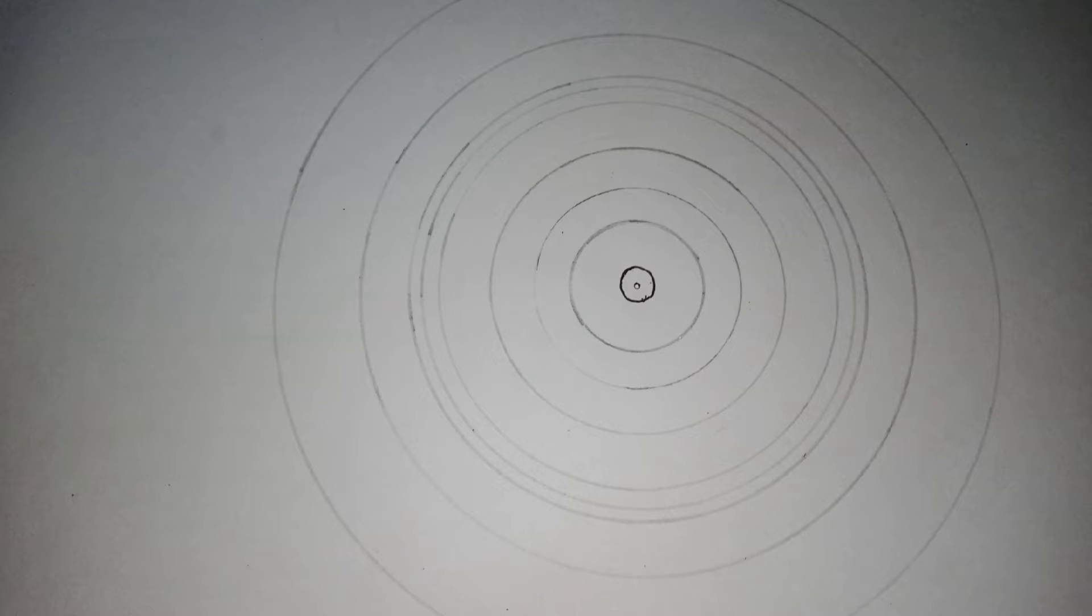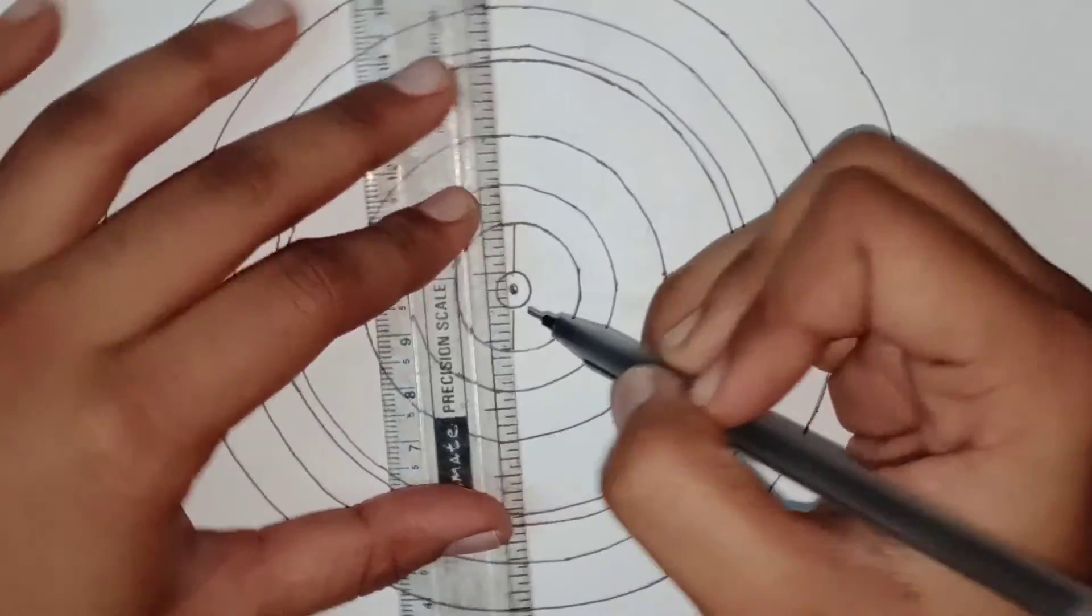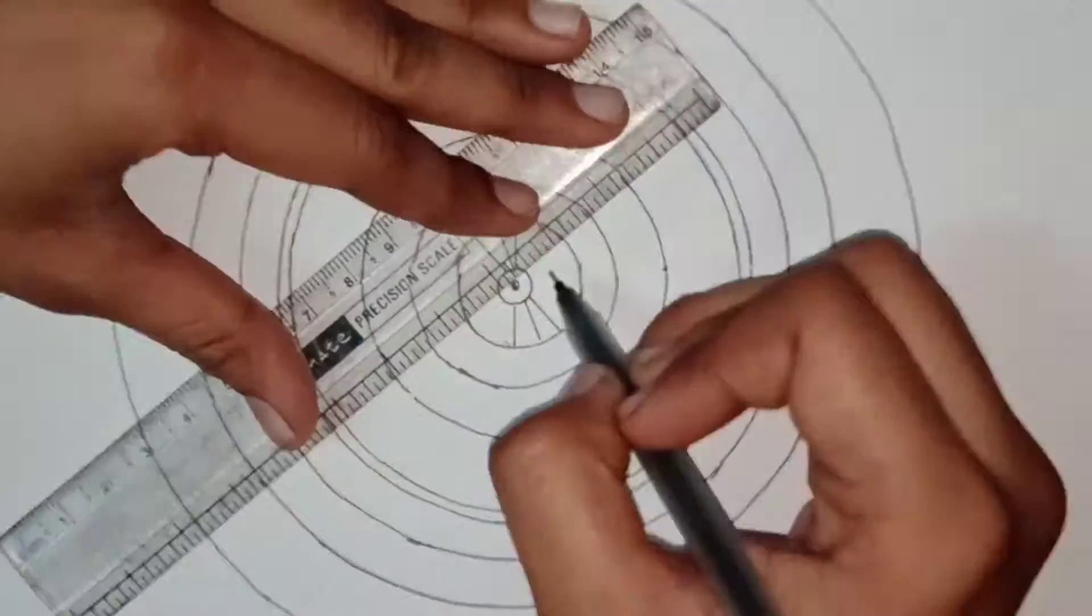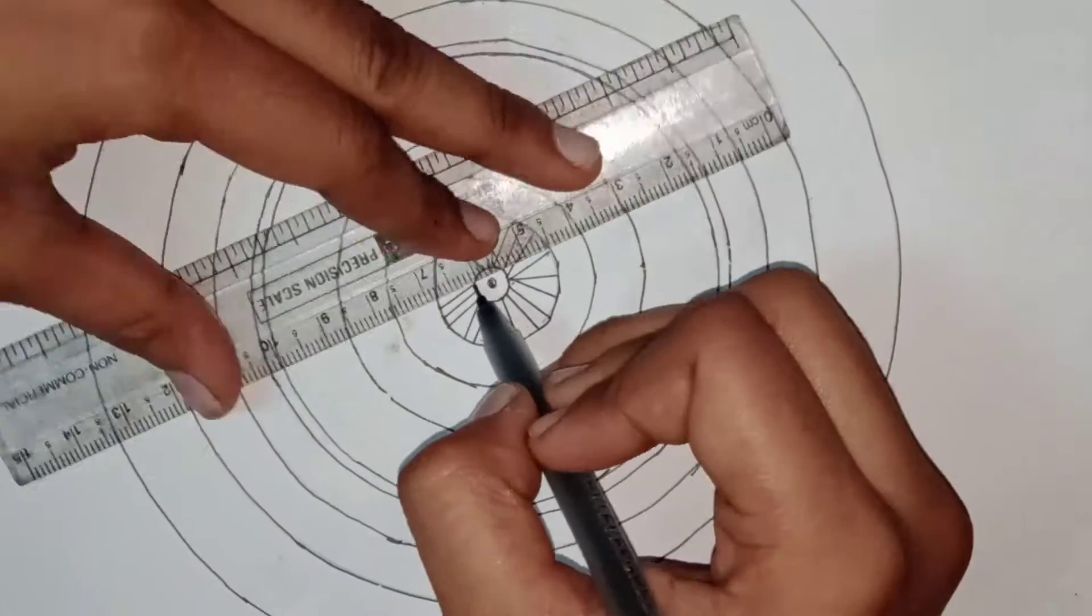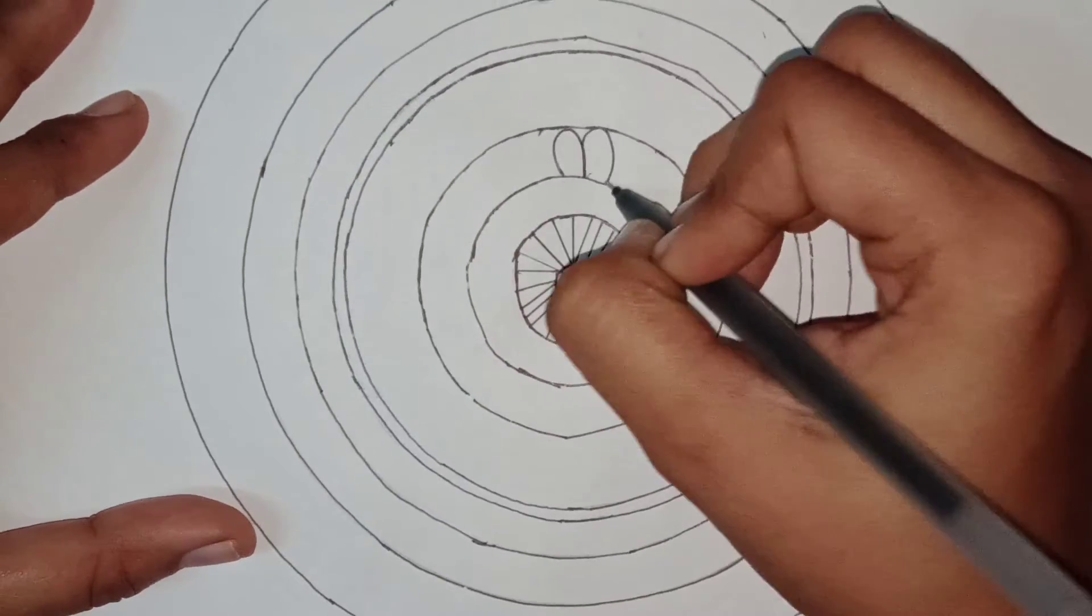First of all, you have to make these circles as I have drawn. We're going to draw lines which are very easy - you can draw them with a scale. Now it's time to draw our very first design which I've shown you in the pic with different designs.